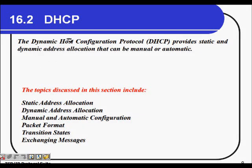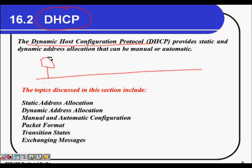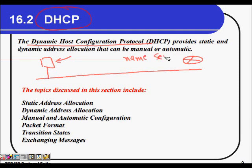We are going to learn about DHCP, or Dynamic Host Configuration Protocol. When you are on a LAN and you turn your computer on, that computer does not know its IP address. To connect to the internet, you need to know your IP address, your network prefix, the default gateway router, and the name server — so that if you want to contact google.com, you know its IP address. DHCP is the protocol which provides IP addresses to machines on a LAN.